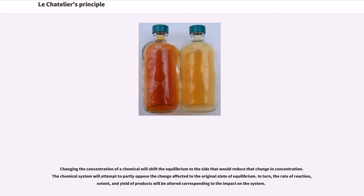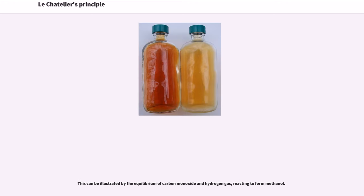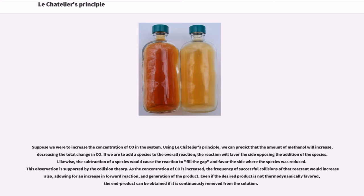Changing the concentration of a chemical will shift the equilibrium to the side that would reduce that change in concentration. The chemical system will attempt to partly oppose the change to the original state of equilibrium. In turn, the rate of reaction, extent, and yield of products will be altered. This can be illustrated by the equilibrium of carbon monoxide and hydrogen gas reacting to form methanol. If we increase the concentration of CO, Le Chatelier's Principle predicts that the amount of methanol will increase, decreasing the total change in CO. If a species is added to the overall reaction, the reaction will favor the side opposing that addition.